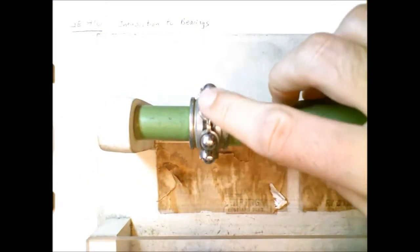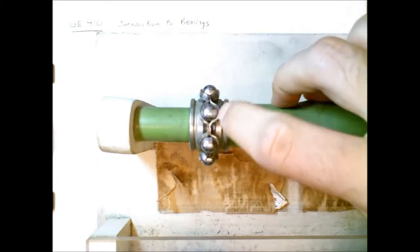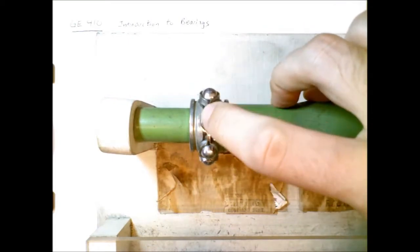And here's a single row ball bearing. We don't have the outer race shown here, just the inner race, the separator, and the rollers, the balls.